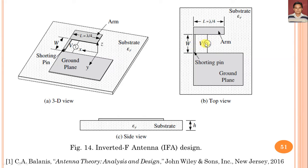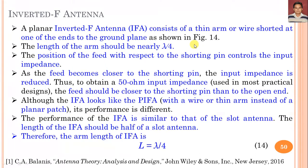For proper impedance matching, the gap between the shorting pin and the feed is very small. In that case we can create inductive as well as capacitive coupling between the elements, and we can get perfect input impedance matching when the feed element is close to the shorting pin. Although the IFA looks like the PIFA with a wire or thin arm instead of a planar patch, its performance is slightly different from the PIFA antenna, and the performance of the inverted F antenna is similar to that of the slot antenna.